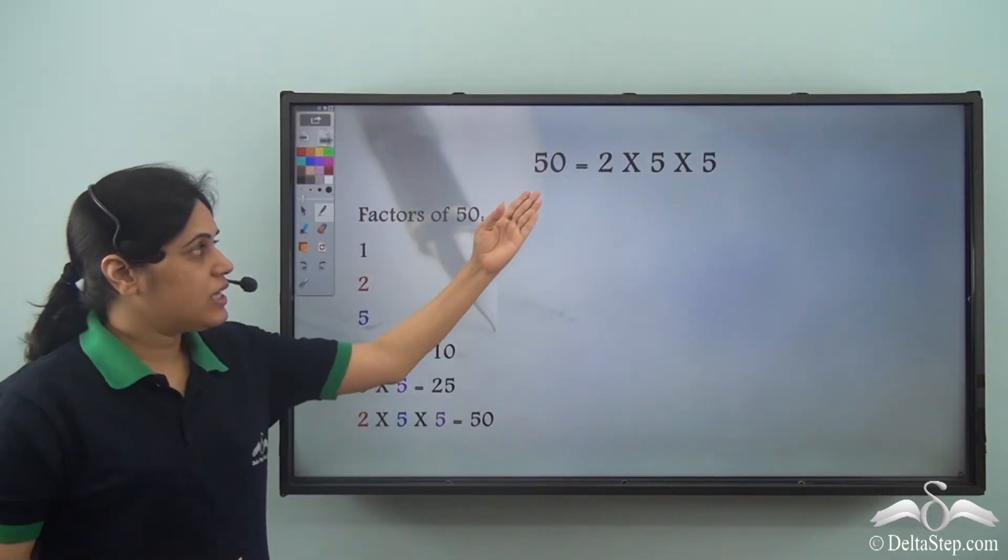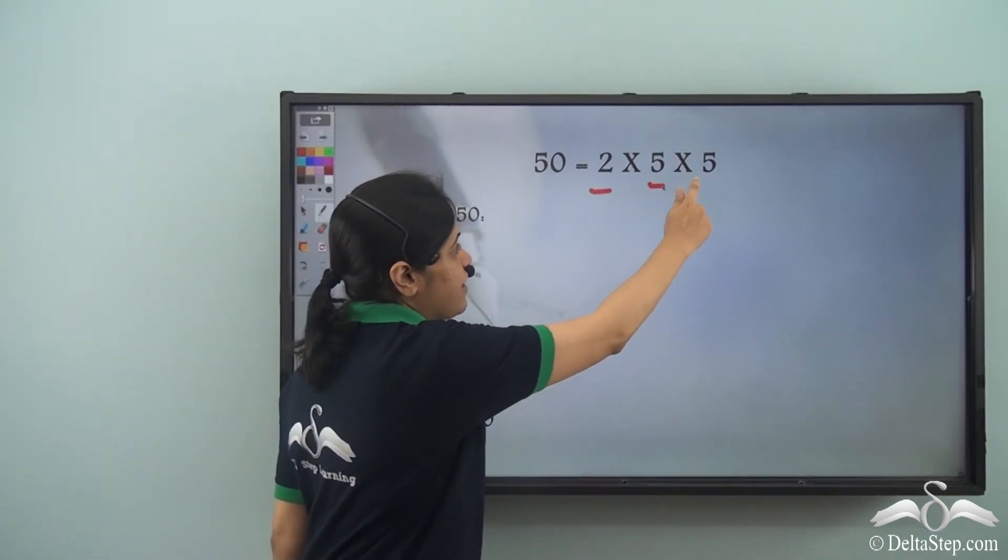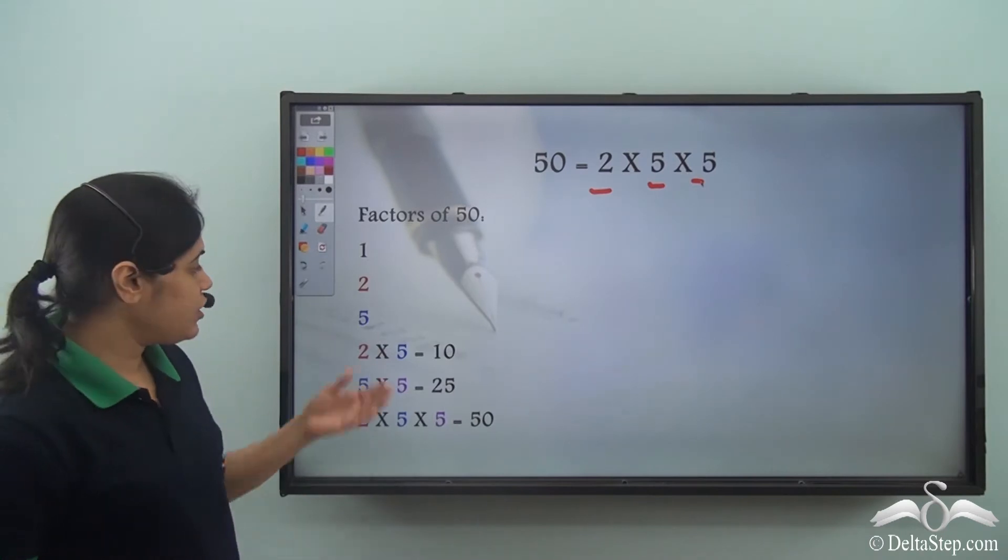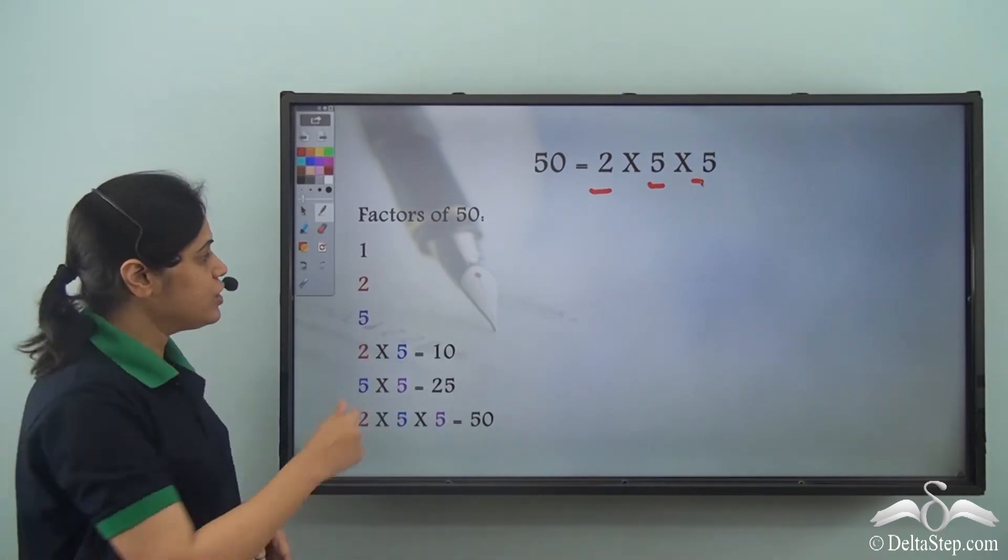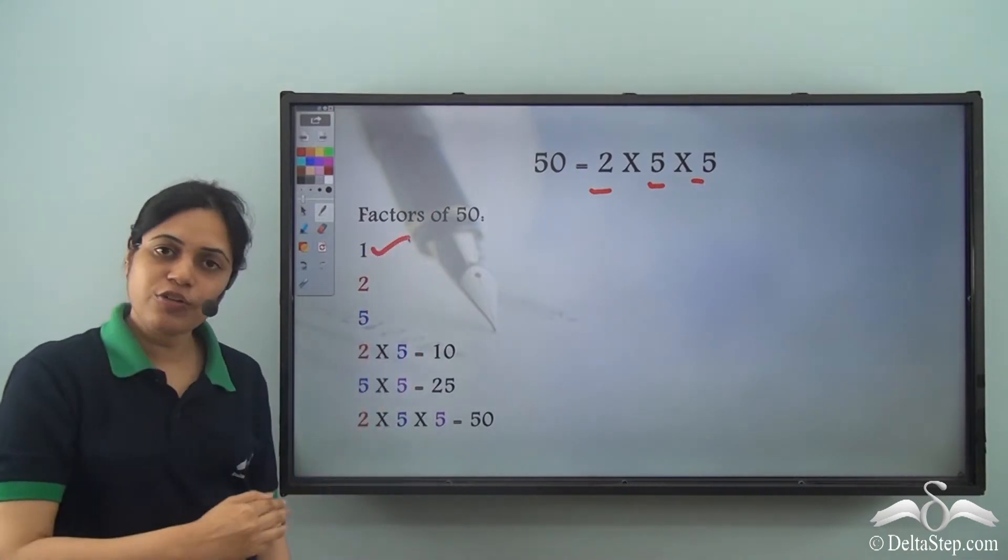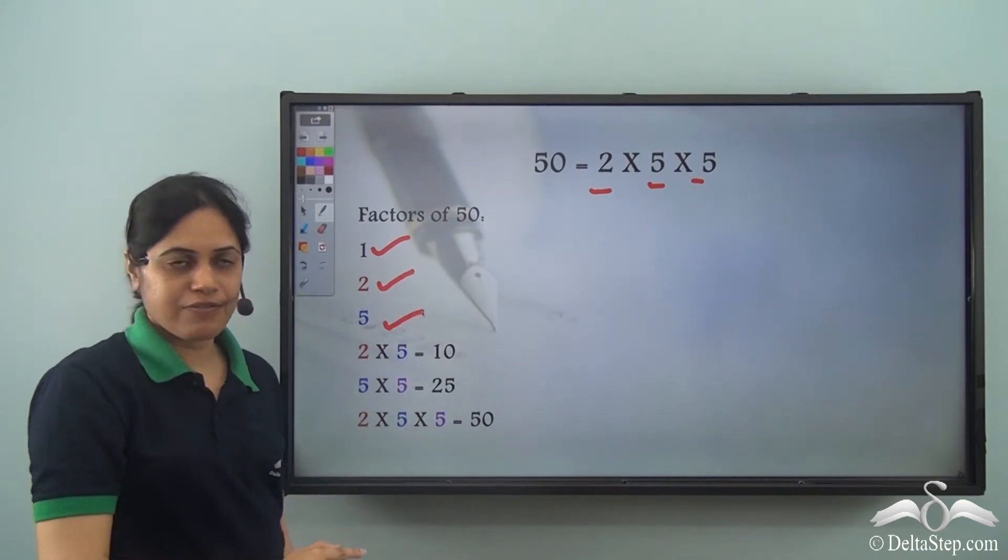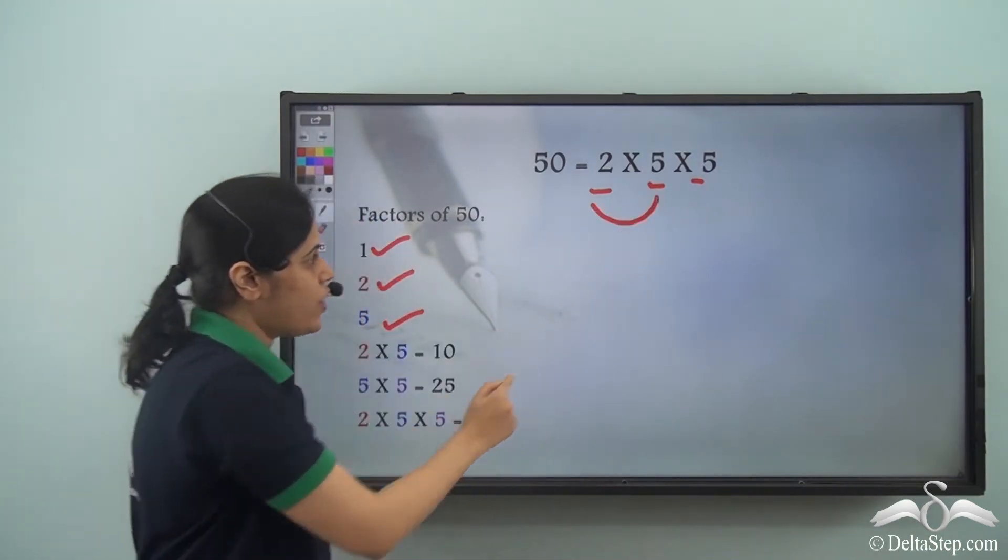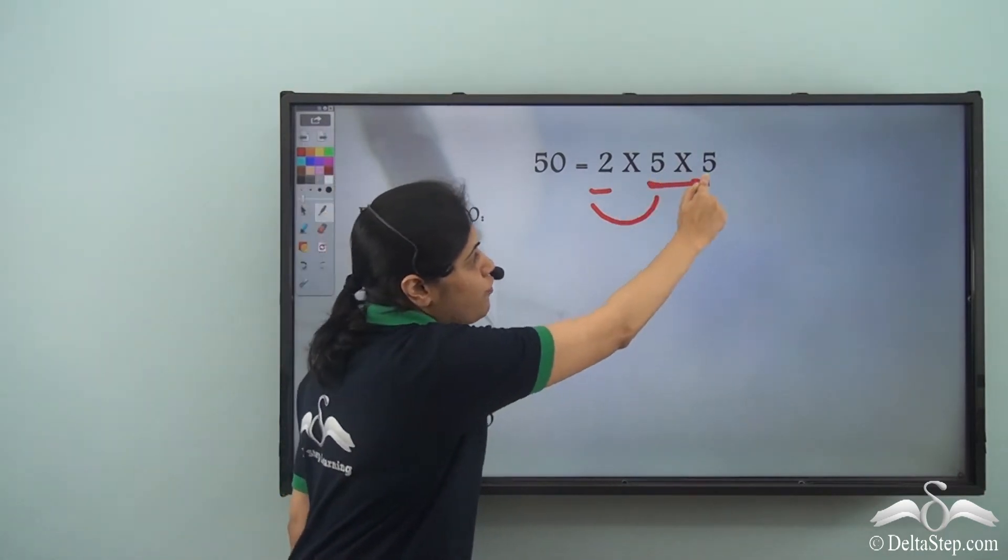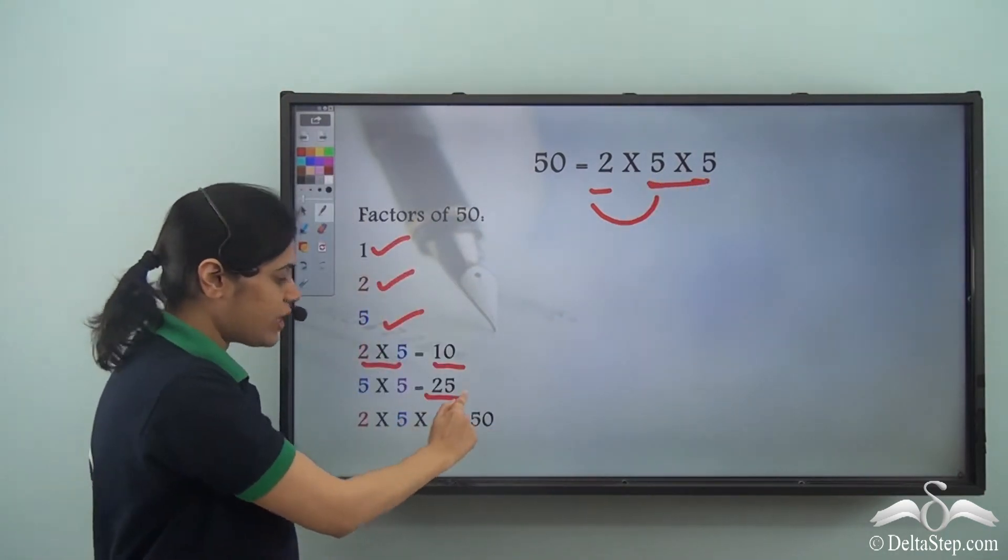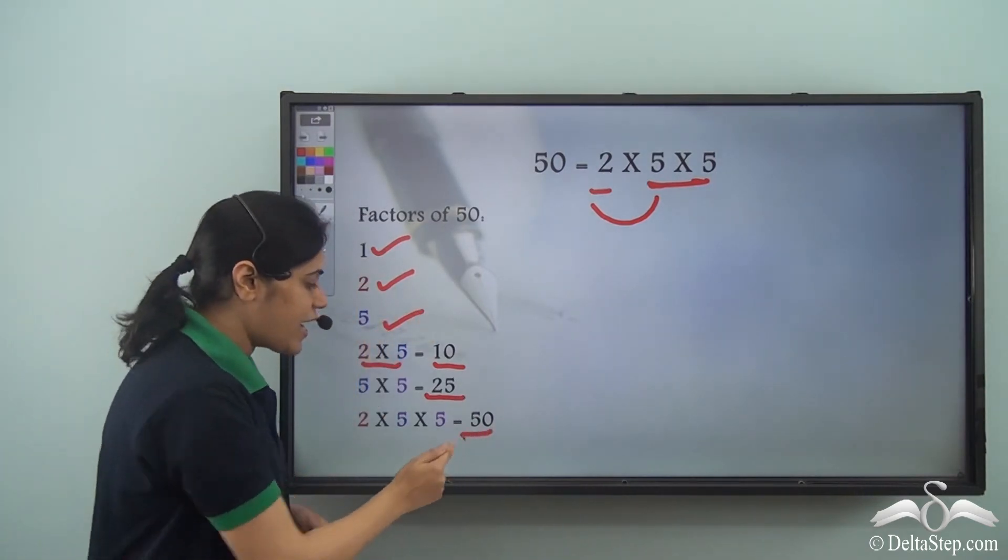So these are the prime factors of 50: 2, 5, and 5. Using these we can get all the factors of 50. One is a factor of every number, then we have 2, then we have 5. Combining 2 and 5 I get 10, combining two 5's together I get 25, and combining all three factors I get 50.